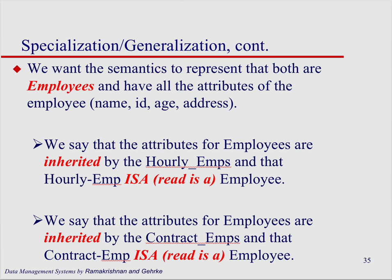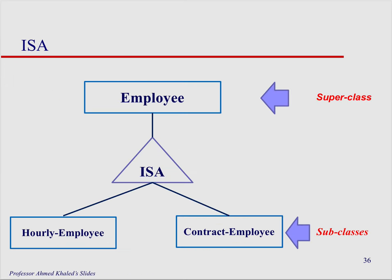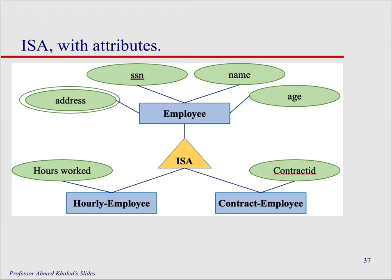This is called an IS-A relationship — similar to concepts in other programming languages. An hourly employee IS-A employee, and a contract employee IS-A employee, so the attributes of the employee entity are inherited by the contract employee. In the ER diagram we have employee, the IS-A symbol, and the hourly employee and contract employee as subclasses — like a superclass and subclass relationship.